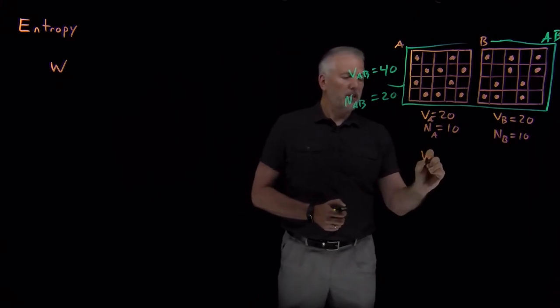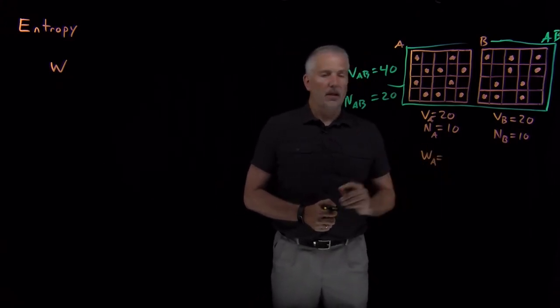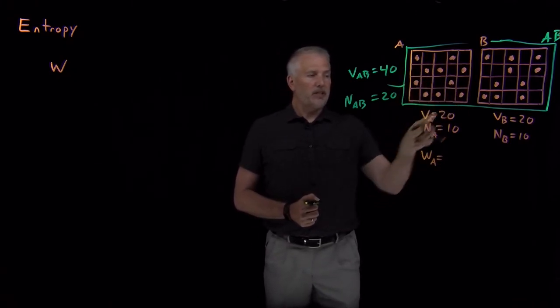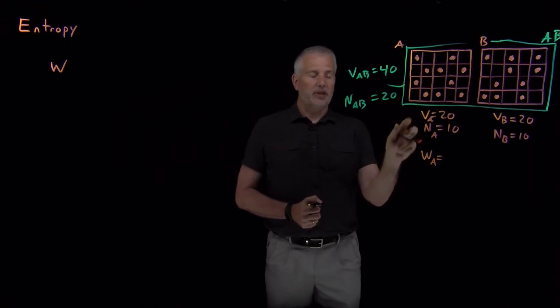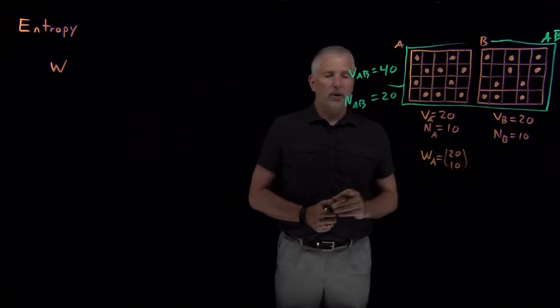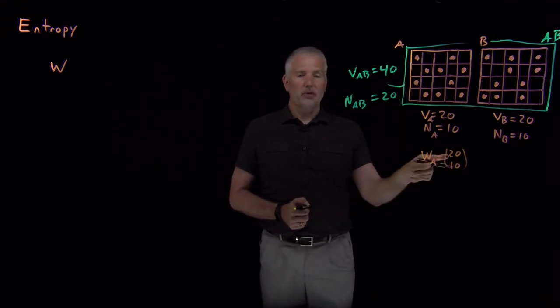What about the multiplicity? On the left side in System A, the multiplicity of the system, the number of microstates I could have drawn that had 10 molecules in a volume 20. I can choose 20 choose 10 different ways of putting 10 molecules in 20 boxes.